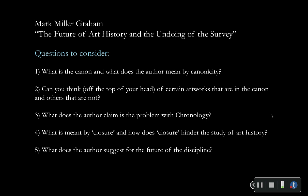Here are some questions I hope you'll consider while reading. Number one: what is the canon and what does the author mean by canonicity? Number two: can you think of certain artworks that are already in the canon once you figure out what it is? Number three: what does the author claim to be the problem with chronology? Number four: what is meant by closure and how does closure hinder the study of art history? And number five: what does the author suggest for the future of the discipline?